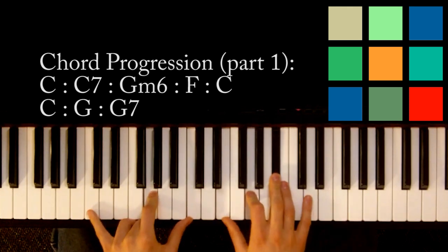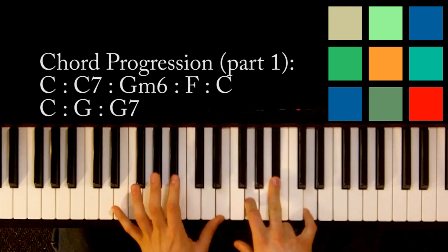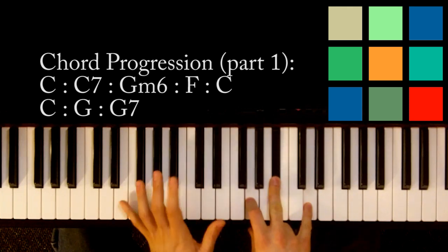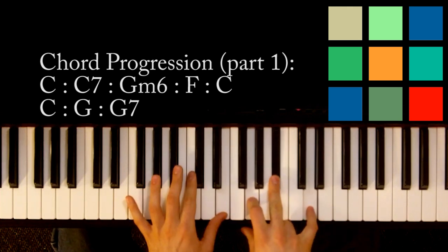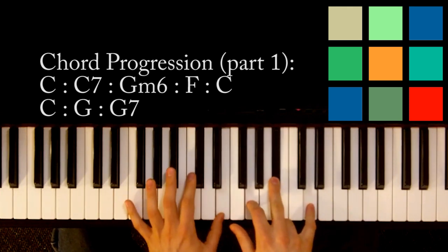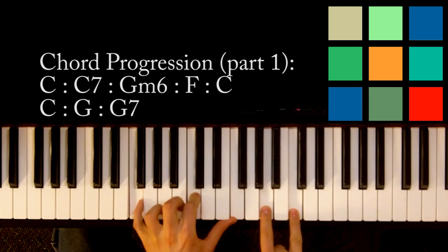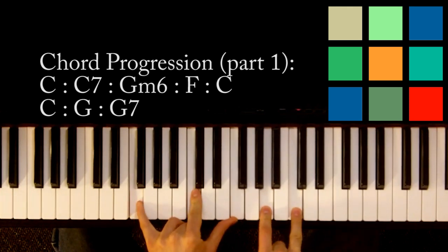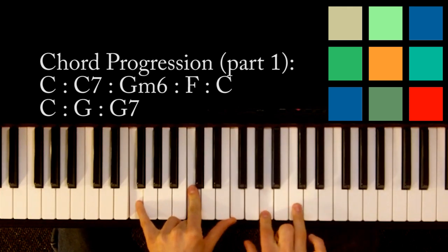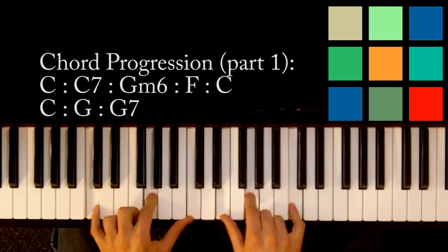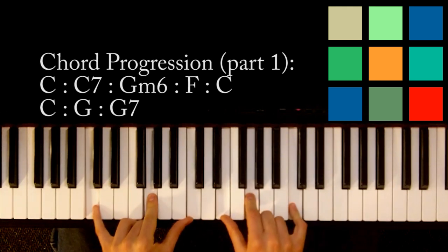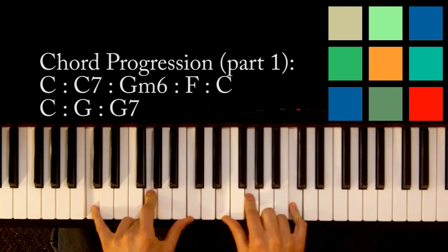Now you're going to move to a G minor 6. Swing low. But I'm going to have you play it like this. With your thumb, an E, your left thumb. And with your right hand, G, B flat, and D. Sweet, chariot. And for chariot, you're going to move to an F. So F, C, and F in your left hand. A and C in your right hand. Chariot.